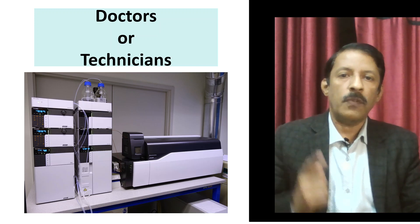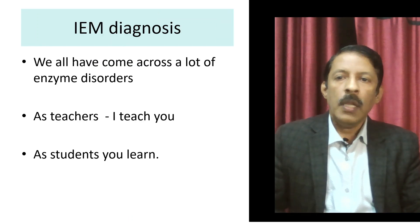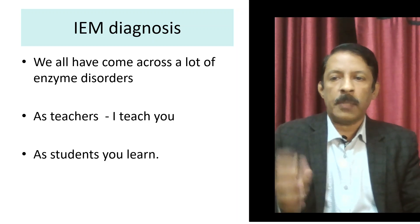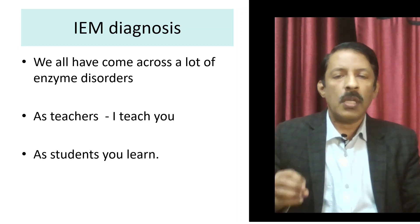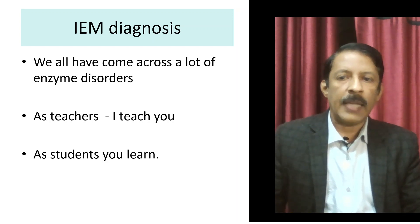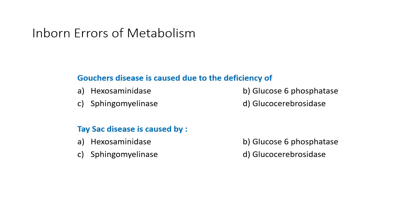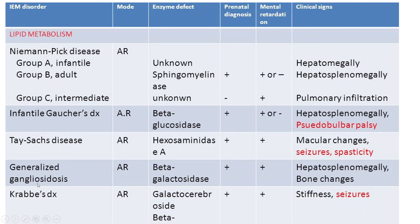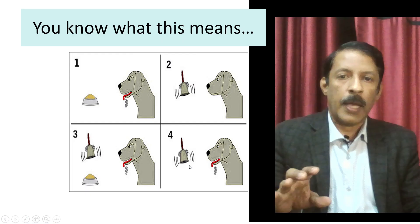In inborn errors of metabolism we've come across a lot of enzymatic defects. As a teacher I put them as beautiful MCQ questions; as a student, they remember Niemann-Pick disease as plus-plus-minus-minus, Gaucher's as minus-minus-plus-plus-minus-minus. With this pattern you approach an MCQ and you know the answer. But what are we actually doing — as teachers and as students?